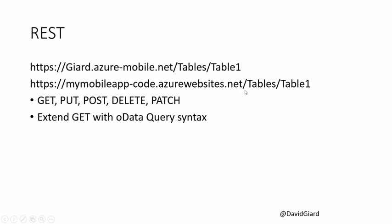The way REST works is we give our resource a single URI. In Azure Mobile Service, that URI will be something like 'GR.azure-mobile.net' — it assigns this suffix to the URI. It's always HTTPS, adding security. To access a specific table, we add '/tables/' and the name of our table. With Azure Mobile App Services, the URI will be something like 'GR-code.azurewebsites.net/tables/' followed by the table name.